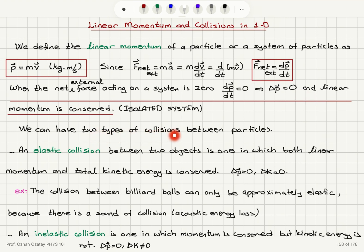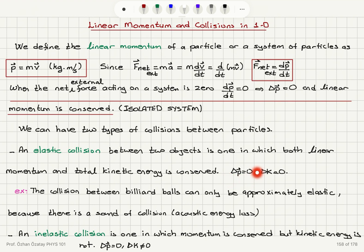We can have two types of collisions between particles: elastic collisions and inelastic collisions. An elastic collision between two objects is one in which both linear momentum and total kinetic energy are conserved. So delta p = 0, meaning the net external force on the system is zero, and there is no change in kinetic energy — that is energy conservation. The system evolves such that both linear momentum and kinetic energy are conserved.